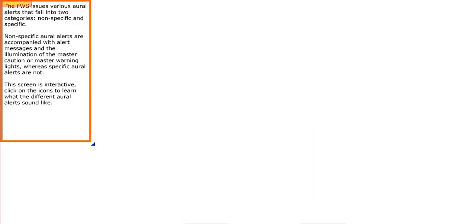The FWS issues various oral alerts that fall into two categories: non-specific and specific. Non-specific oral alerts are accompanied with alert messages and the illumination of the master caution or master warning lights, whereas specific oral alerts are not. This screen is interactive. Click on the icons to learn what the different oral alerts sound like.